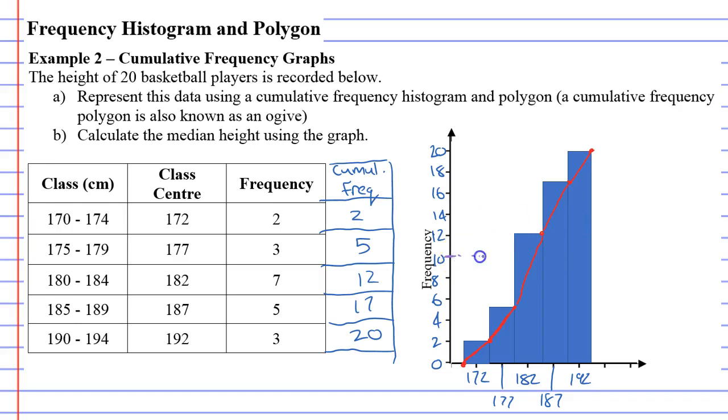Which means if we go across from the 10, and hit the red line, and then come down, we will get to see what our median is. We'll get an exact value, or at least an estimate anyway. So, here's 182, and here's 187. So, I would say that's about 184, 185. So, I'm going to say that my median is 184 centimetres.